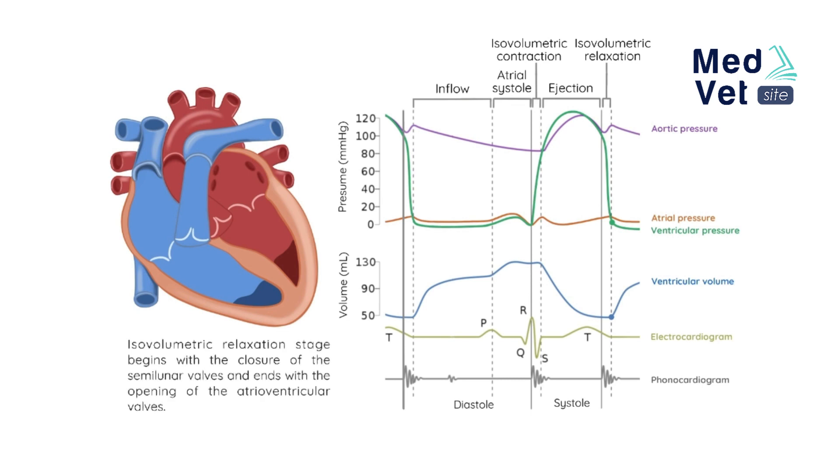To remember, the isovolumetric relaxation stage begins with the closure of the semilunar valves and ends with the opening of the atrioventricular valves.